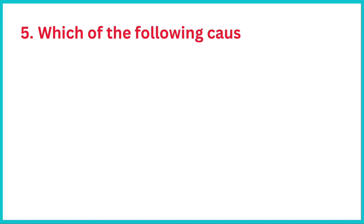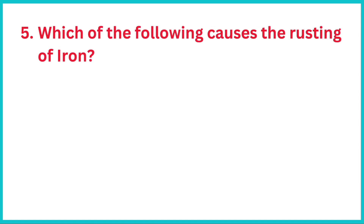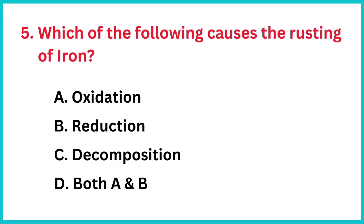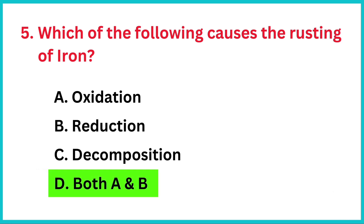Which of the following causes the rusting of iron? The correct answer is option D: Both oxidation and reduction.